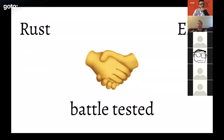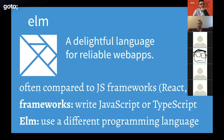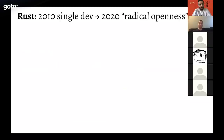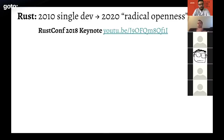Both Rust and Elm are quite battle-tested. Rust has been around for about a decade — back in 2010 its first release came from one single developer, and now about a decade later it has a significant list of contributors and a large team. They develop the language using what they call radical openness, trying to include as many voices as possible and be completely open and transparent about everything they do.